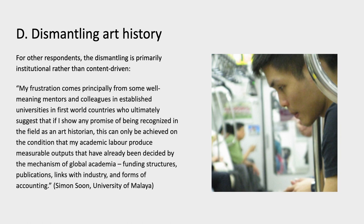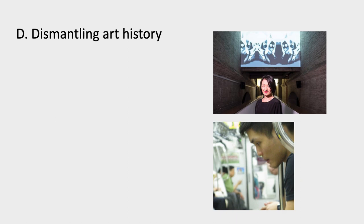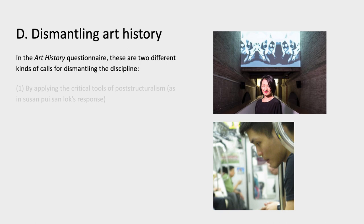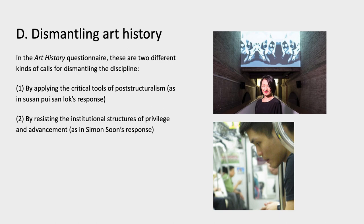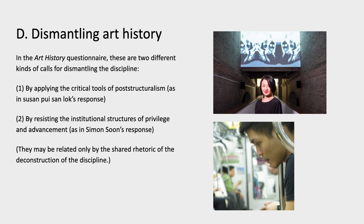For other respondents, the dismantling of the discipline is primarily a question of institutional politics. Simon Soon from University of Malaya expressed frustration with well-meaning mentors and colleagues in established universities in first-world countries who suggest that recognition as an art historian can only be achieved on the condition that one's academic labor produce measurable outputs already decided by the mechanisms of global academia — funding structures, publications, links with industry, and forms of accounting. In the questionnaire, these represent two different kinds of calls for dismantling: those who would apply critical tools of post-structuralism, and those more interested in the discipline's institutional politics, flows of money, and careers. They may only be related by the shared rhetoric of deconstruction of the discipline.